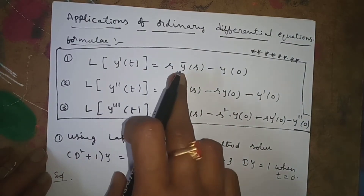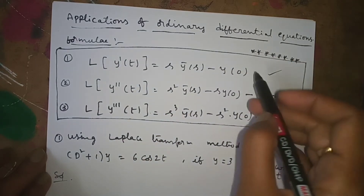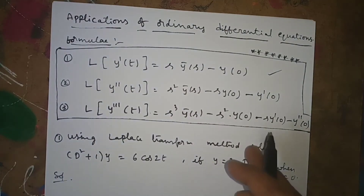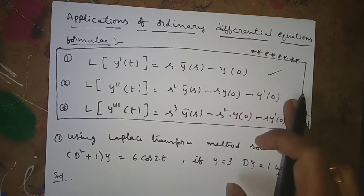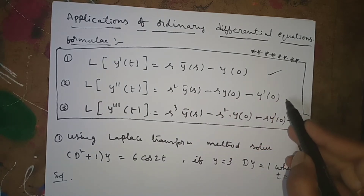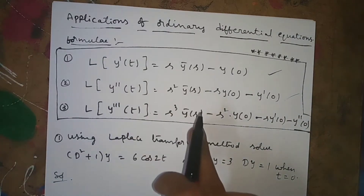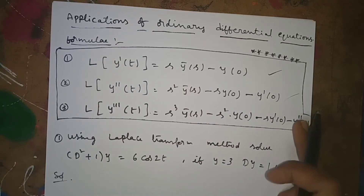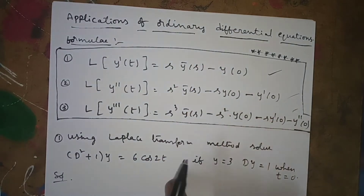The first derivative formula: L{y'(t)} = s·ȳ(s) − y(0). The second derivative formula: L{y''(t)} = s²·ȳ(s) − s·y(0) − y'(0). The third derivative formula: L{y'''(t)} = s³·ȳ(s) − s²·y(0) − s·y'(0) − y''(0). These three formulas are very important to solve the problems.